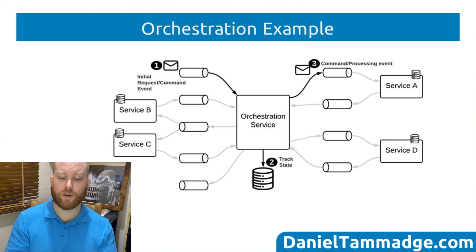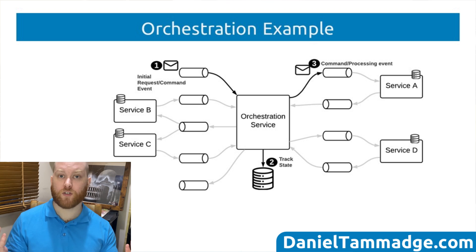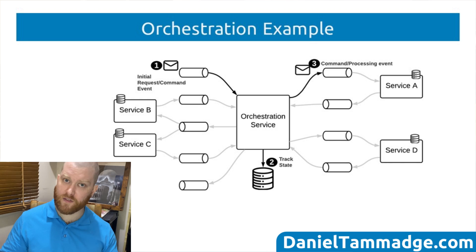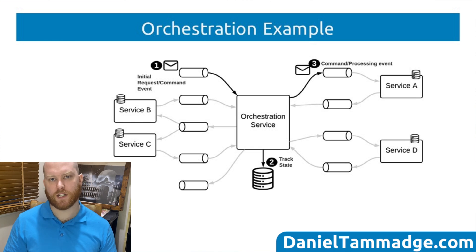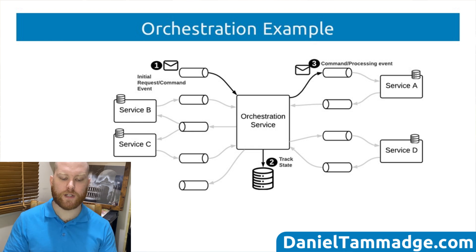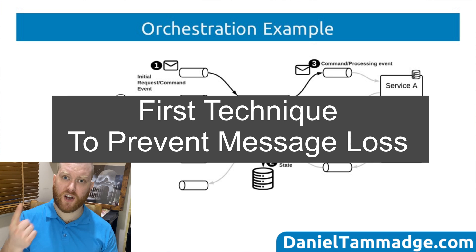The first step is for the orchestration service to consume the initial request, which may have been published by a public customer experience API, a back office service, or an upstream event processor worker triggered by another orchestration service upstream. Once the orchestration service has consumed the request, it creates a new record in a persistent database table and publishes the processing command to the first service, Service A.